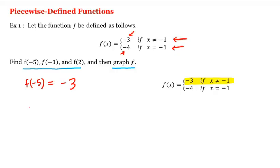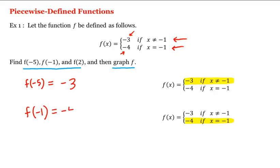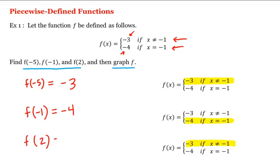And what about f of negative 1? We'll be using the second piece down here, because the input is negative 1, which means f is equal to negative 4. And finally, what about f of 2? Well, since 2 is not equal to negative 1, we'll be using this first piece. That is, f of 2 is equal to negative 3.